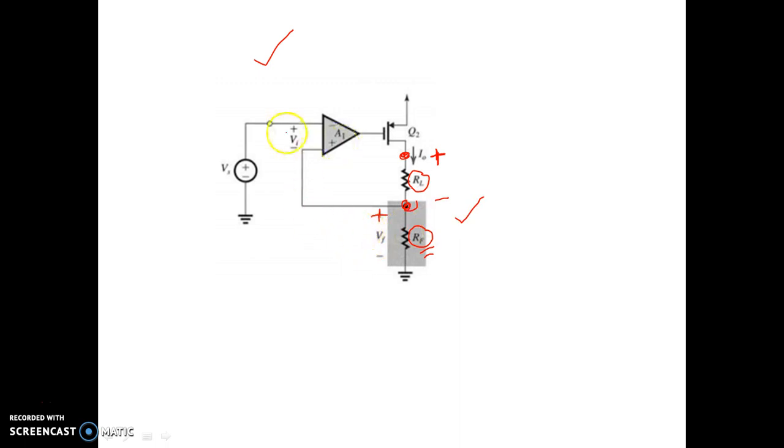And see, the input network - this is the original error signal or original input of the basic amplifier block. Here, this signal voltage is coming from the function generator, and this is the feedback voltage. To determine the effect of the feedback voltage on the signal voltage coming from the function generator, what we have to do? We have to apply KVL in this loop.